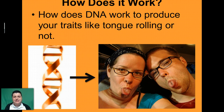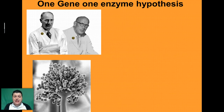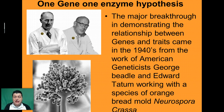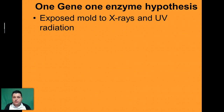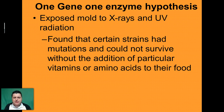We're going to step through the process that it takes to go from our gene to our physical trait, like rolling our tongue. Two scientists, George Beadle and Edward Tatum, were the first to really begin understanding the relationship between genes and our traits. They were working with a bread mold called Neurospora crassa, and they exposed it to x-rays and ultraviolet radiation to mutate the DNA inside. They found that certain strains had a mutation which made it very difficult for them to survive without supplementing their food with extra vitamins and amino acids.